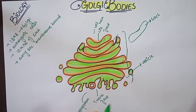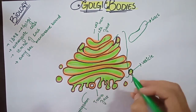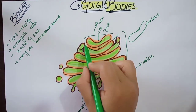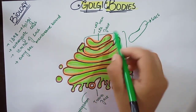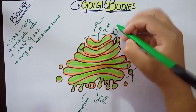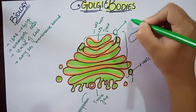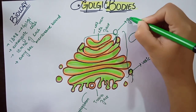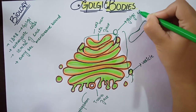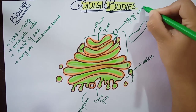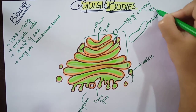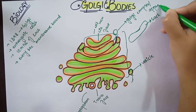A sac along with its vesicles is known as the Golgi complex. It is also known as the Golgi apparatus.